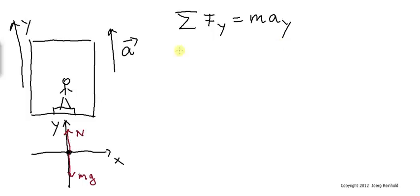In the positive y-direction we have N. In the negative y-direction we have the weight of the person, mg. That equals m*ay.